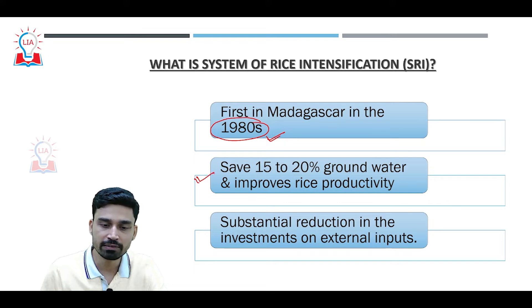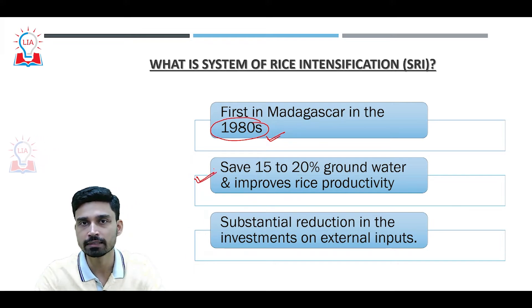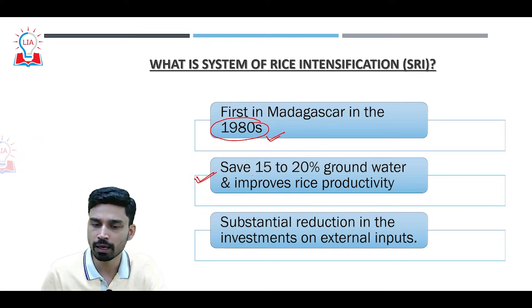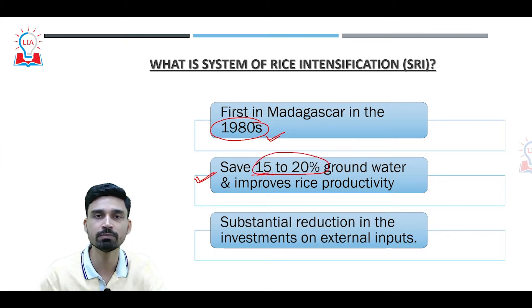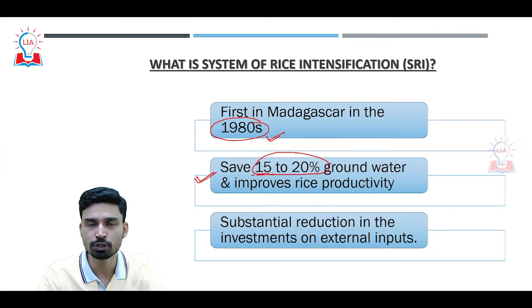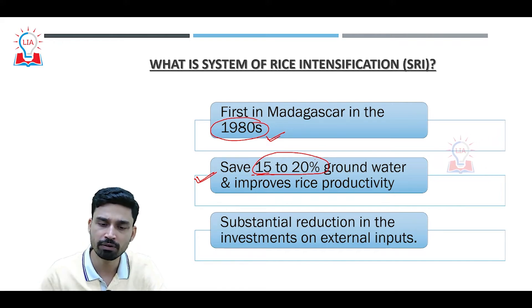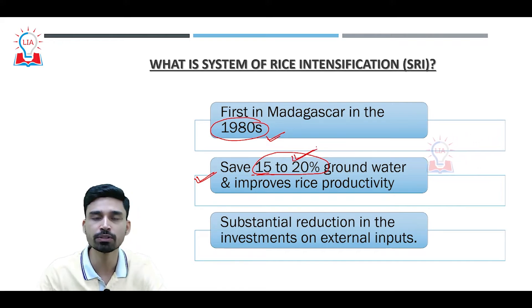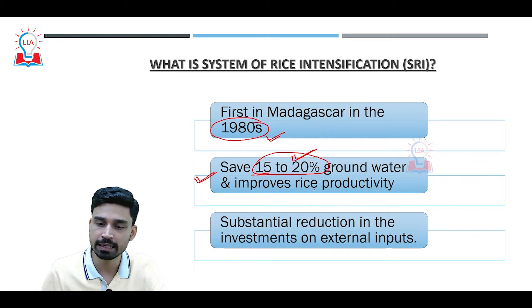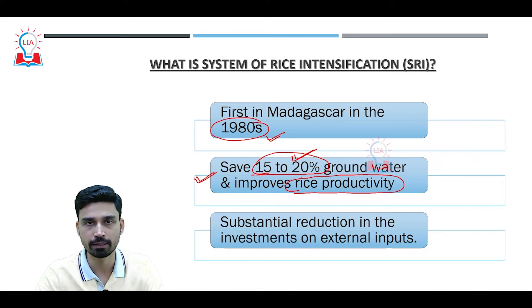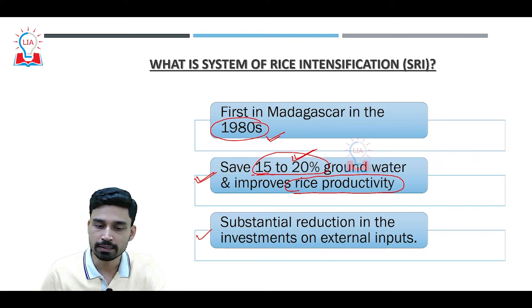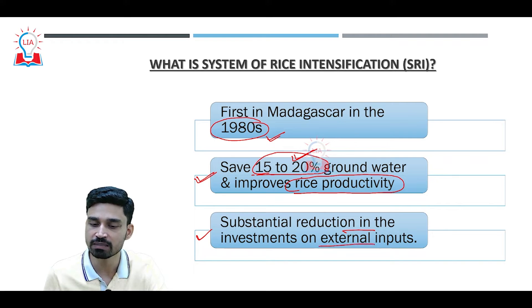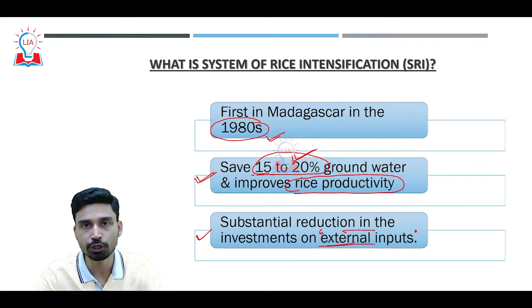The main advantage is that SRI saves groundwater. Actual experiments done in districts of Gujarat, Rajasthan, Punjab, and Telangana show that around 15 to 20 percent of groundwater is saved, while the productivity of rice also increases. The SRI method also leads to a substantial reduction in investment on external inputs, which is very beneficial for small and marginal farmers who make up a large number in India.